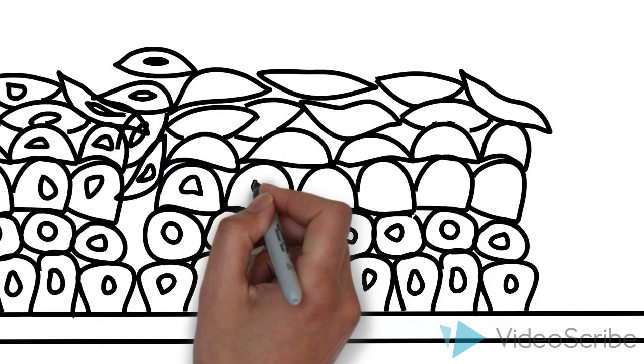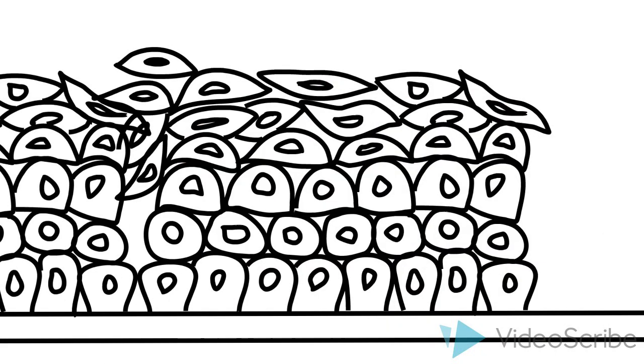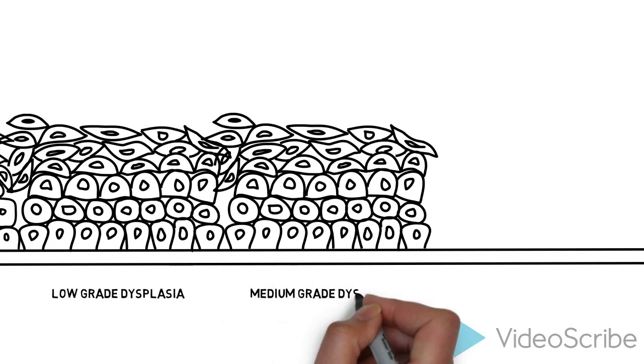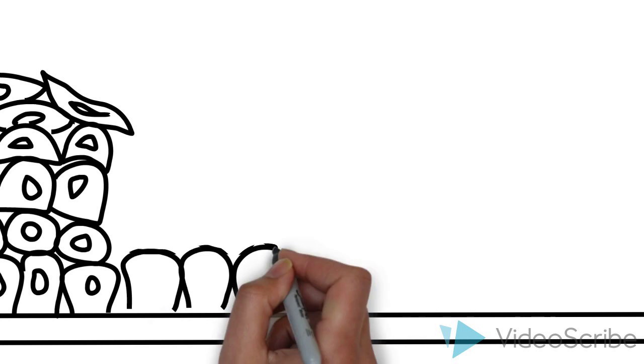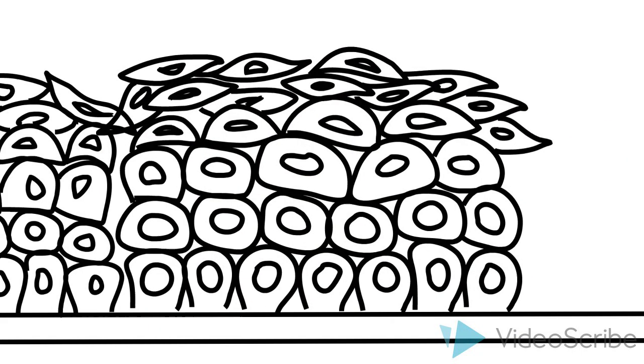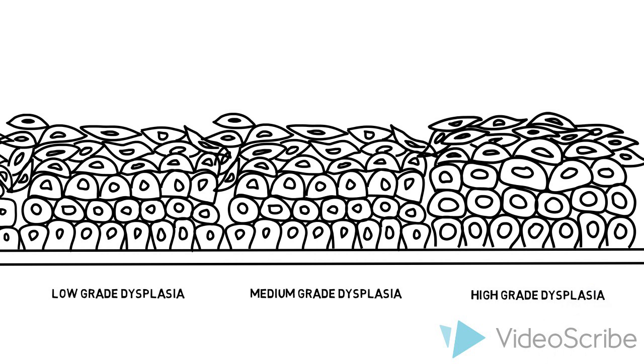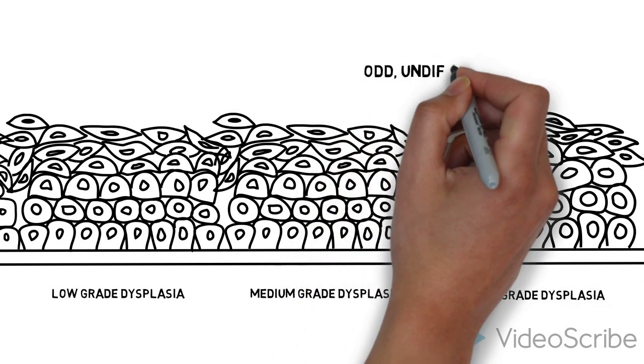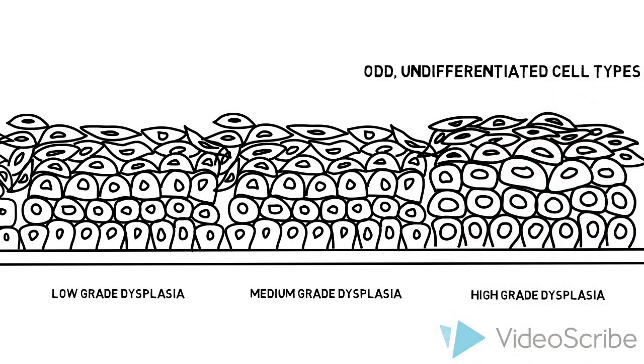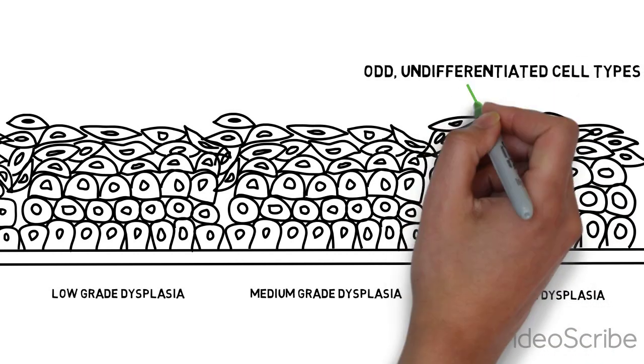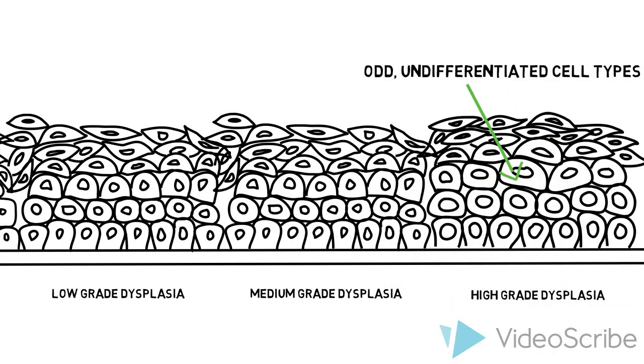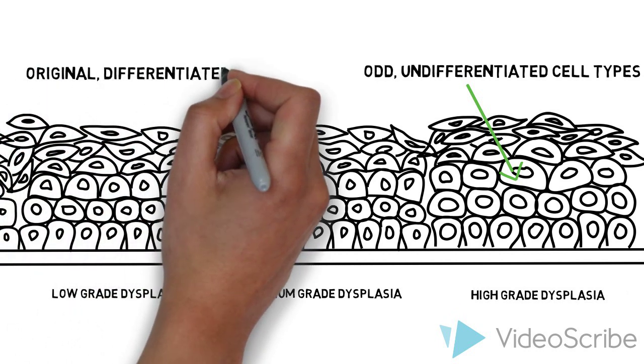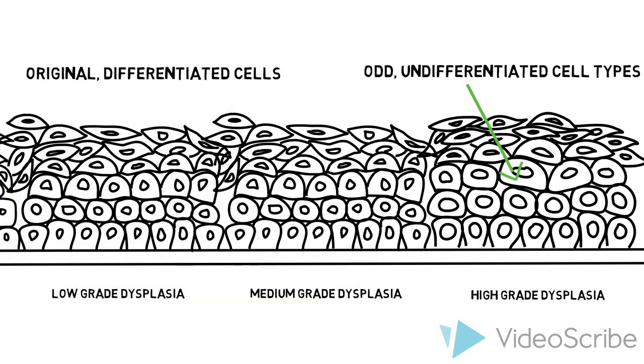It then changes to medium-grade and finally high-grade dysplasia, where the cells are very different from their original cells. High-grade dysplasia is also termed less differentiated because they lose their original tissue specificity and the mutations cause them to form odd cell types which have no differentiation in the body.